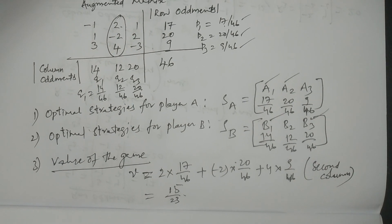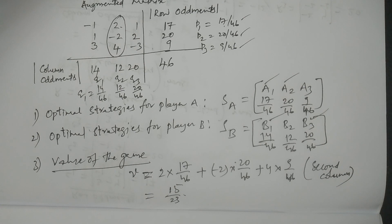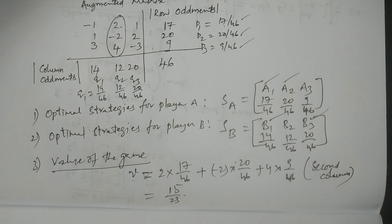So this is a way to calculate a given n-by-n game problem — here a three-by-three game problem — using the matrix oddments method. Hope you understand. This is the solution of an n-by-n game using the method of matrix oddments. Thank you very much.